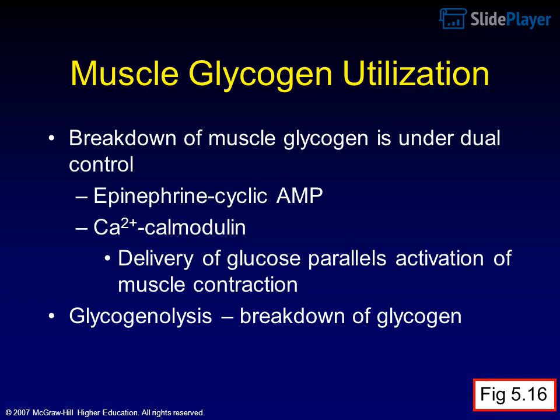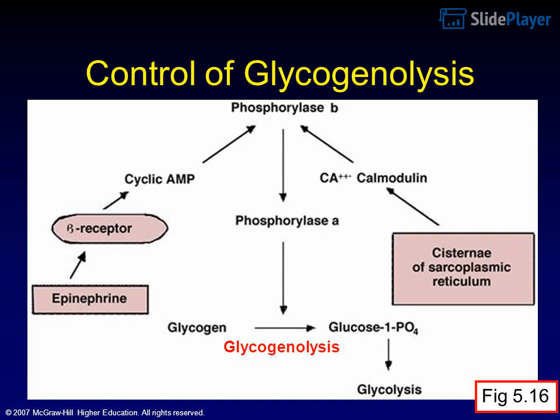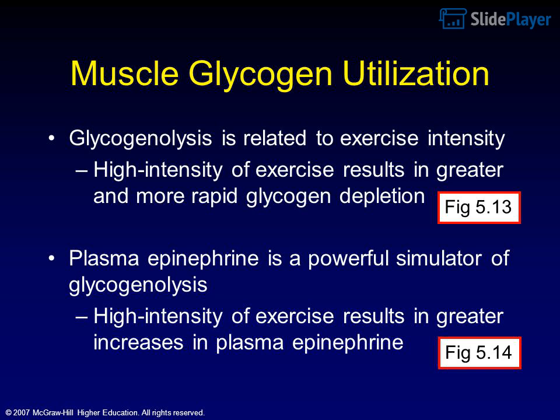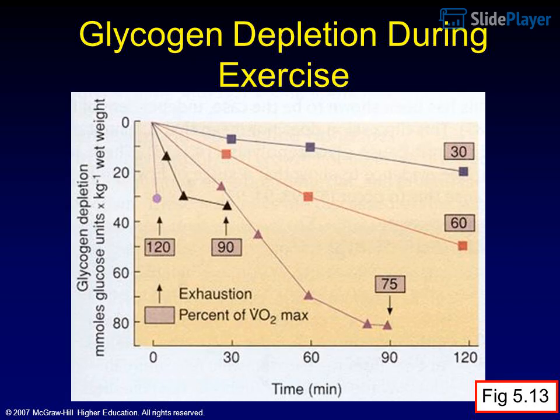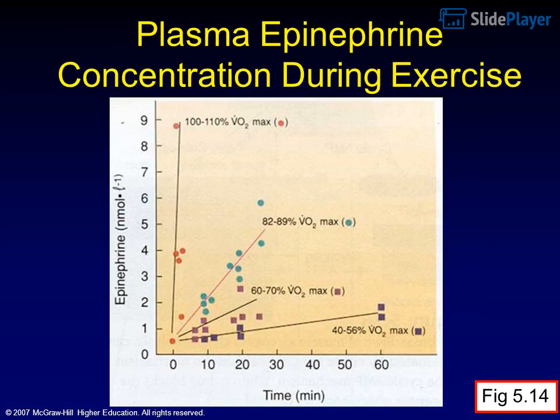Muscle glycogen utilization: breakdown of muscle glycogen is under dual control — epinephrine via cyclic AMP, and Ca²⁺ via calmodulin. Delivery of glucose parallels activation of muscle contraction. Glycogenolysis is related to exercise intensity; high intensity exercise results in greater and more rapid glycogen depletion. Plasma epinephrine is a powerful stimulator of glycogenolysis, and high-intensity exercise results in greater increases in plasma epinephrine.